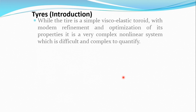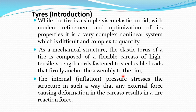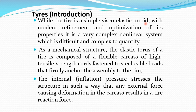A Tyre is essentially a viscoelastic toroid — a circular cross-section member refined with specific rubber material and reinforcement. The rubber used is not natural rubber alone; it is a combination of natural and synthetic rubber molded into a viscoelastic material. Optimizing tyre properties is difficult to quantify exactly, so we use sets of empirical formulas to justify the values, which are approximate rather than exact.